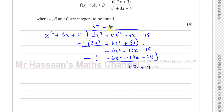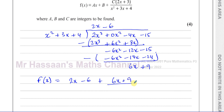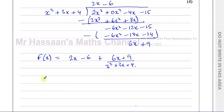This is the quotient — the whole number part — and 6x plus 9 is the remainder. So we can say f(x) equals 2x minus 6 plus the remainder 6x plus 9 over the original denominator x squared plus 3x plus 4. To write it in the required form, there's a common factor of 3 in the numerator that we need to take out.